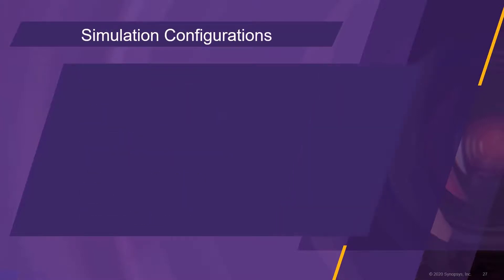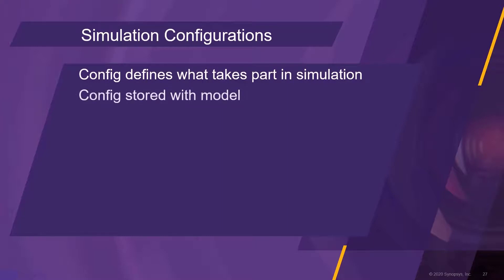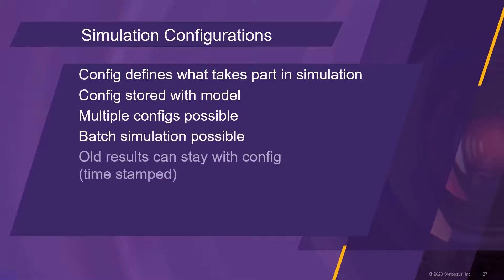A simulation configuration is a structure which helps greatly with the organization of simulation data. A configuration defines what takes part in a simulation. Configurations are stored with the model, so it is possible to look up under which conditions a simulation was performed. It is possible to create multiple configurations and have them simulated sequentially. As old results can stay with the configuration, a version history can be established.